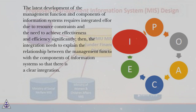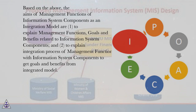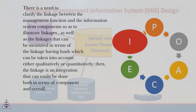The latest development of the management function and components of information systems requires integrated effort, due to resource constraints and the need to achieve effectiveness and efficiency significantly. The integration needs to explain the relationship between the management function and the components of information systems so that there is a clear integration. The aims of management functions of information system components as an integration model are: (1) to explain management functions, goals and benefits related to information system components, and (2) to explain the integration process of management functions with information system components to get goals and benefits from the integrated model.